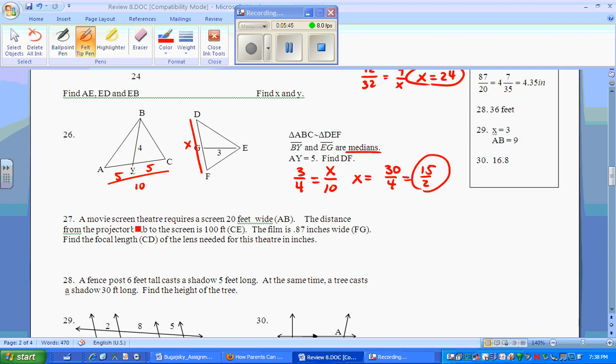Number 27. You don't even need to draw pictures. This movie screen theater requires 20 feet wide, and the distance from the projection bulb is 100 feet. The film is 0.87 wide, find the length of it. So we match wide with wide, length with length. 20 to 0.87 equals 100 over x. Cross multiply, and you get 87 over 20, or if you prefer, 4.35 inches, because they gave you a decimal to begin with.